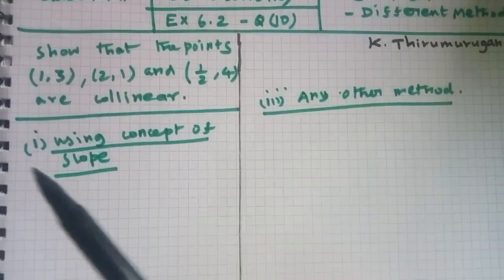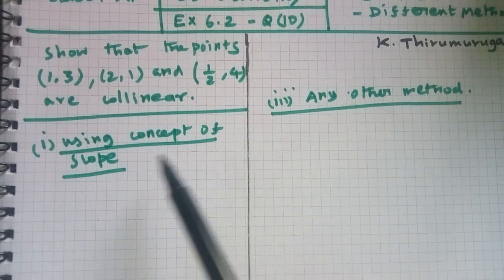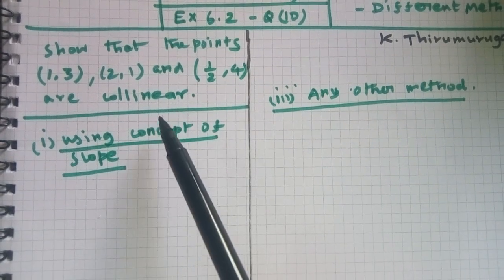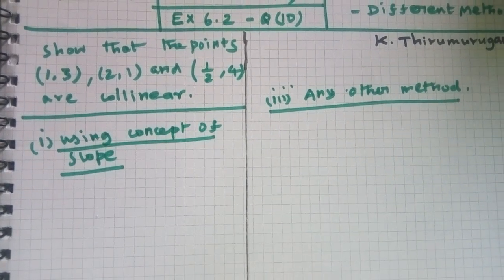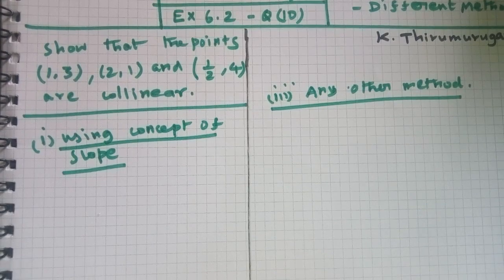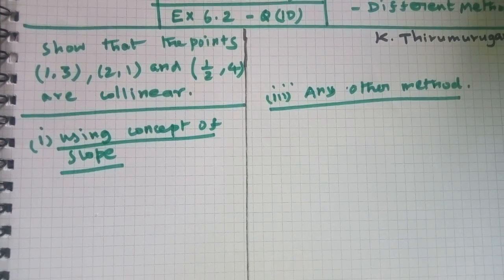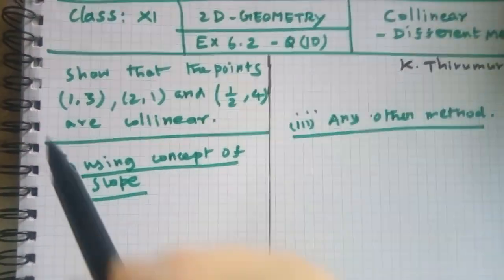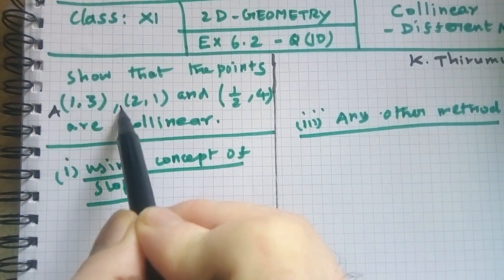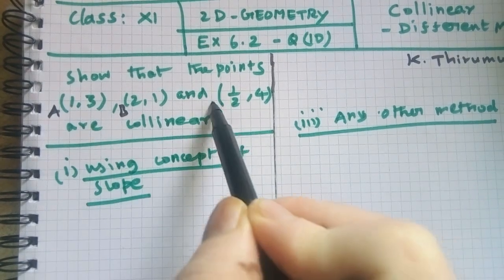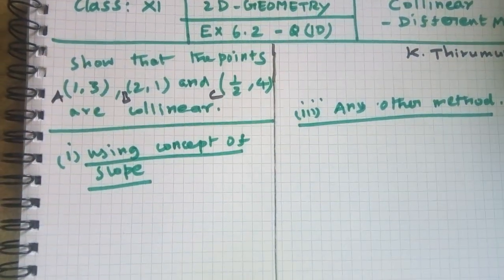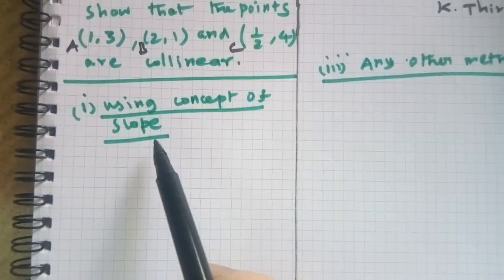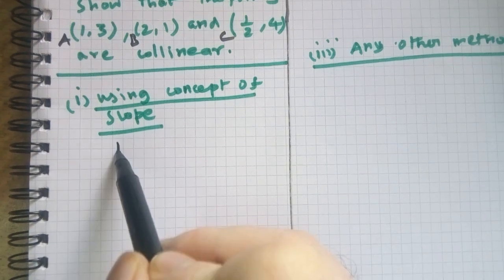First, we will explain the concept of the slope formula for the collinear method. For the given points, we will take A, B, C method using the concept of slope formula.